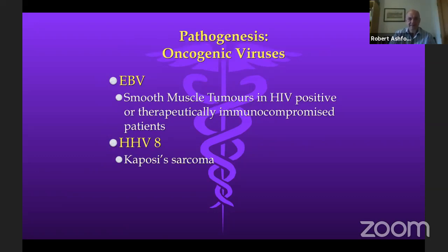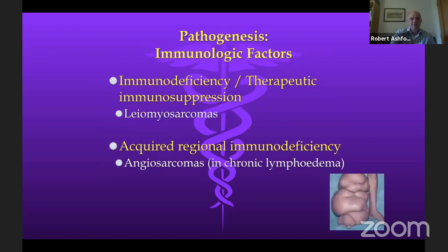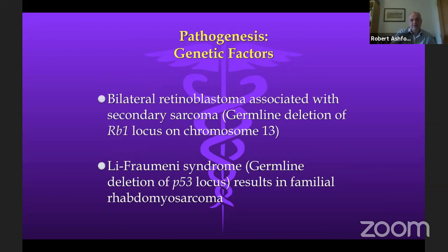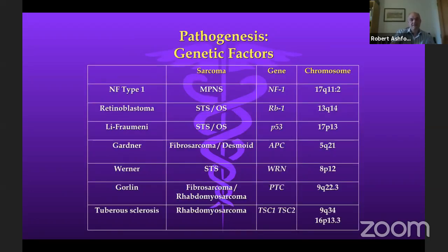Regarding oncogenic viruses: EBV can cause smooth muscle tumors in HIV-positive or therapeutically immunocompromised patients; HHV8 can cause Kaposi sarcoma. From an immunologic standpoint, immunodeficiency can lead to leiomyosarcomas, and acquired regional immunodeficiency such as chronic lymphedema can lead to angiosarcomas — all rare but recognized causes. Genetic factors include bilateral retinoblastoma associated with secondary sarcoma due to germline deletion of the RB1 locus, and Li-Fraumeni syndrome, which results from germline deletion of the p53 locus, causing familial rhabdomyosarcoma and other sarcomas.